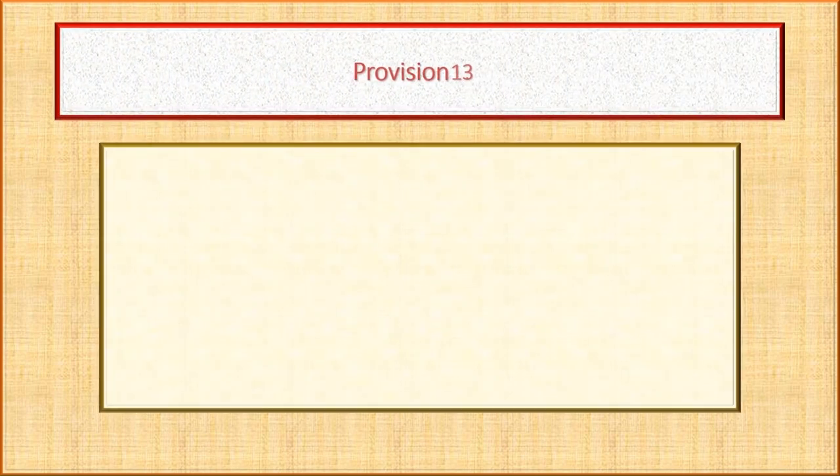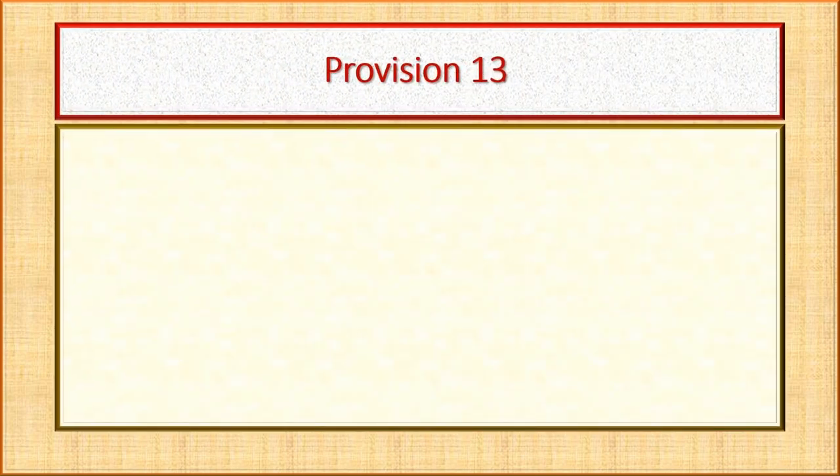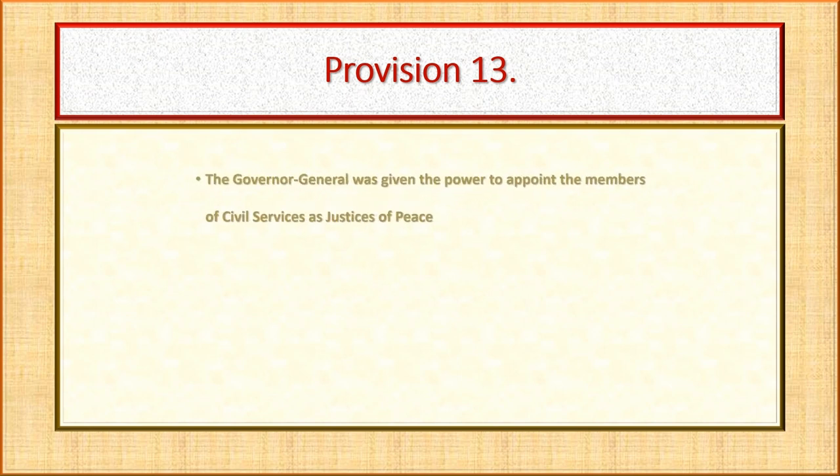By Provision 13, the governor general was given the power to appoint members of the civil services as justices of peace.